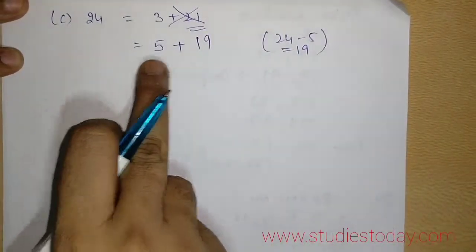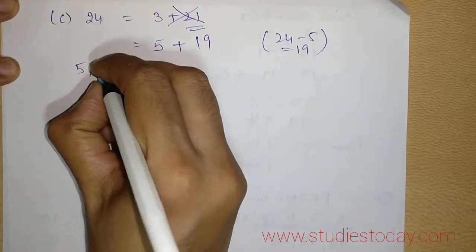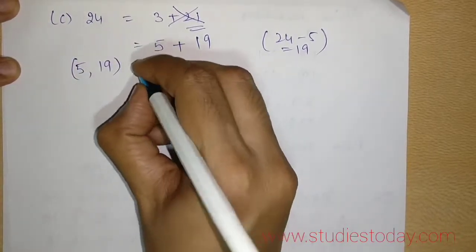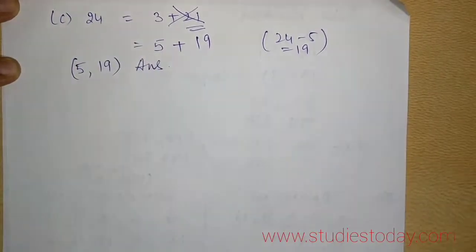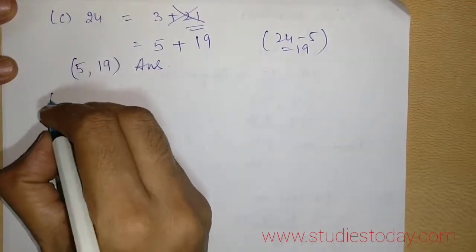So here I am getting both of them as odd and prime. So my work is done. I get a set. So 5, 19 is the answer for the sum of the odd primes to be 24.